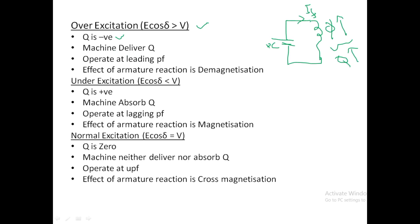What will the machine do? It has more reactive power, so it will be delivering that reactive power. In case of a motor, if it is delivering reactive power, it will be operating at a leading power factor. If flux is more, the effect of armature reaction will be demagnetization. In an overexcited state, effect of armature reaction is demagnetization. In a synchronous generator at demagnetization it operates at lagging power factor, but in a motor it operates at leading power factor — that is the main difference. So Q is negative, machine delivers reactive power, operates at leading power factor, and the effect is demagnetization.